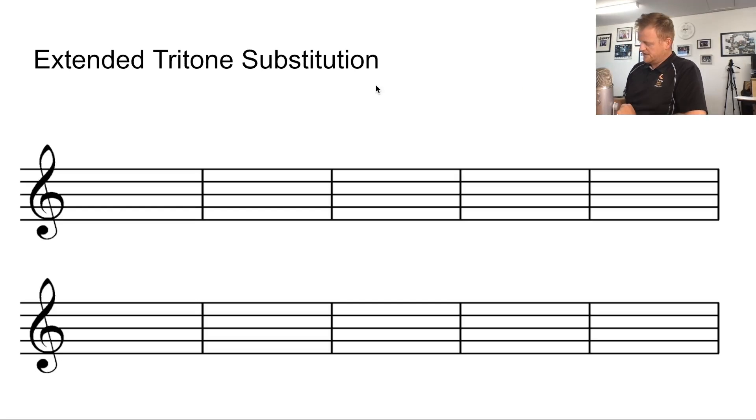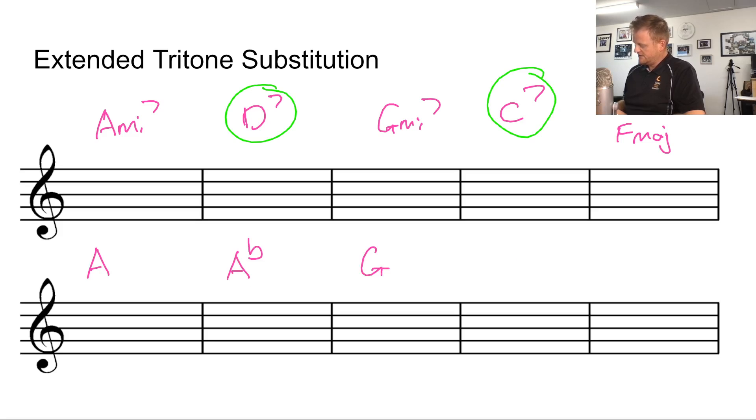Let's look at a bit harder one. If I did a 3-6-2-5-1 in F major, so I'm going to go A minor, D7, G minor 7 to C7 to F major. I could do a tritone substitution on each of these two. Then the whole progression would become A, A♭, G, G♭, F. You can kind of see why people like it because it changes the harmony quite a lot.